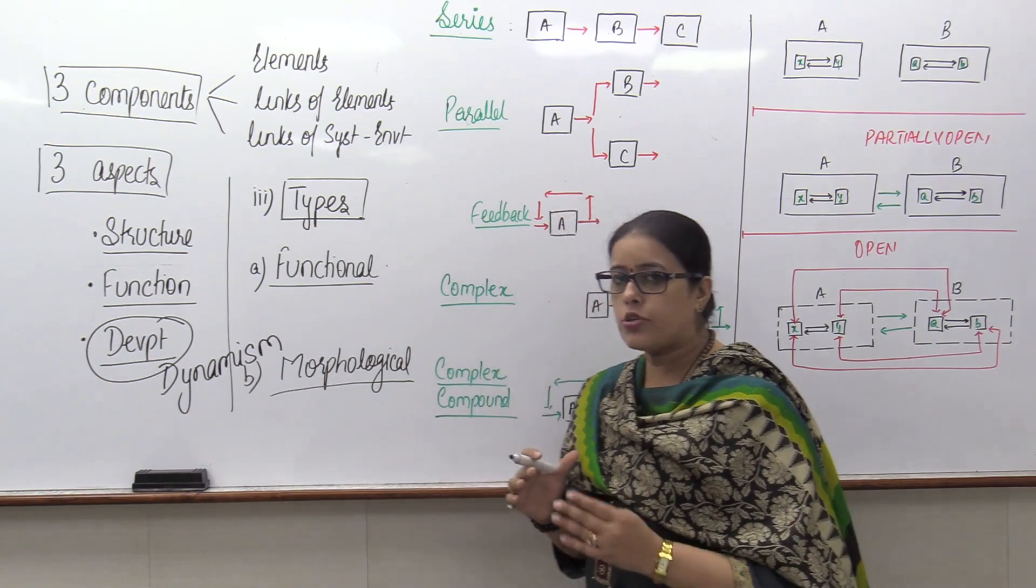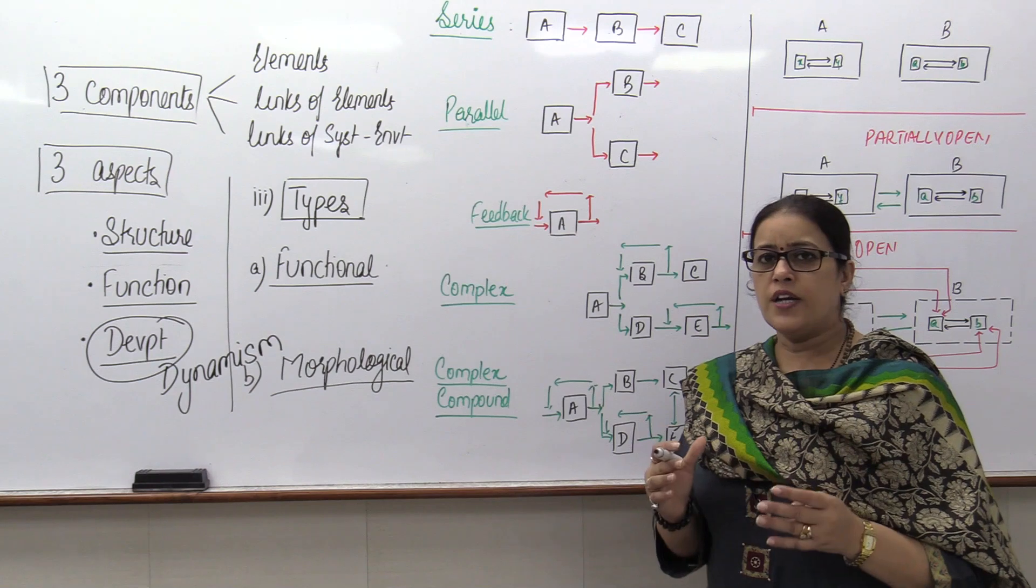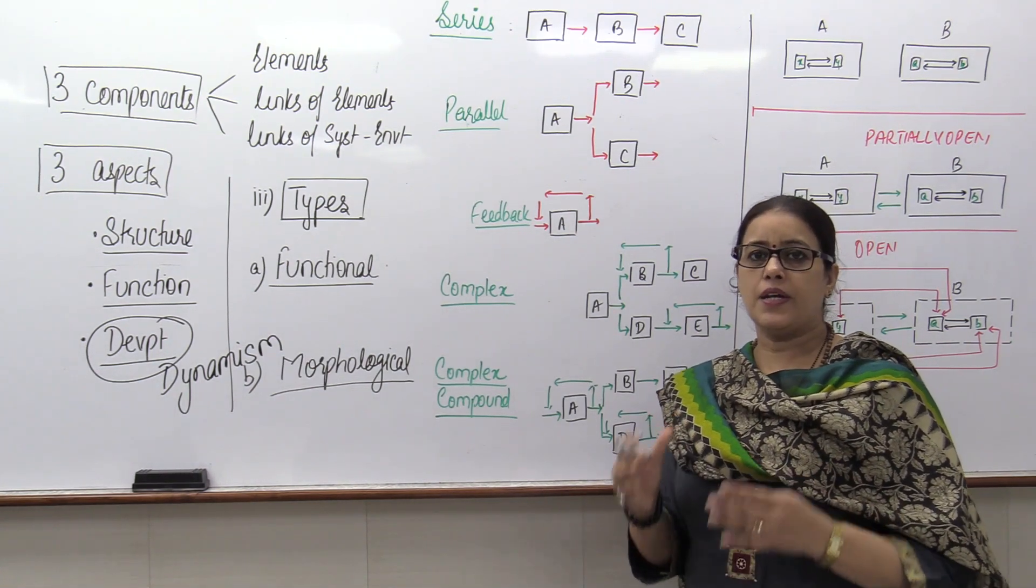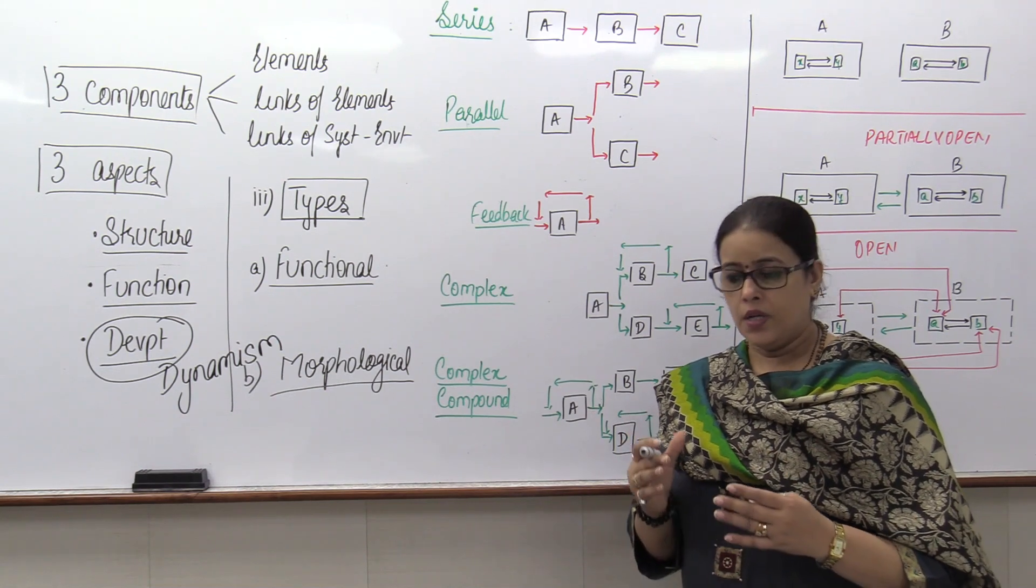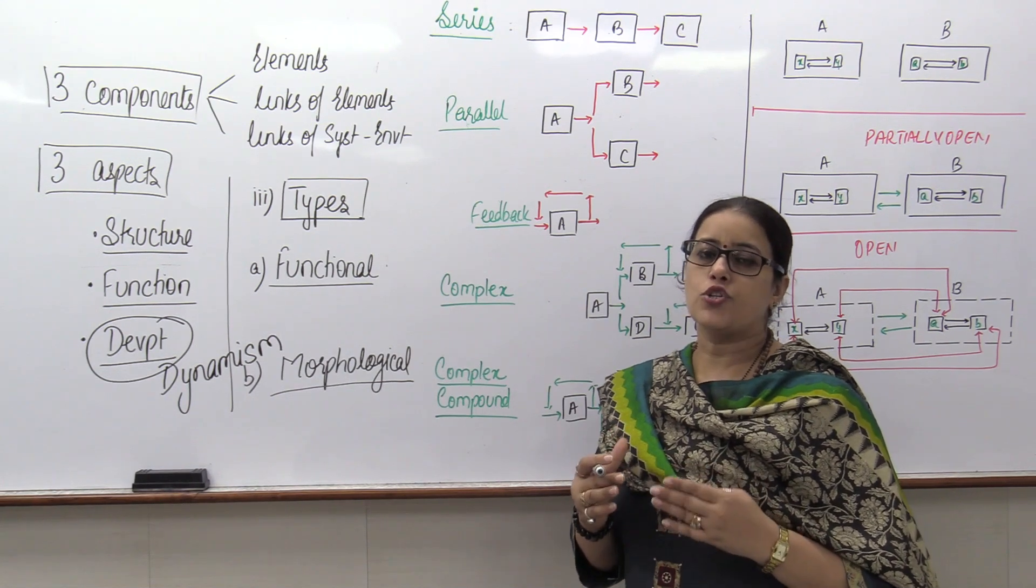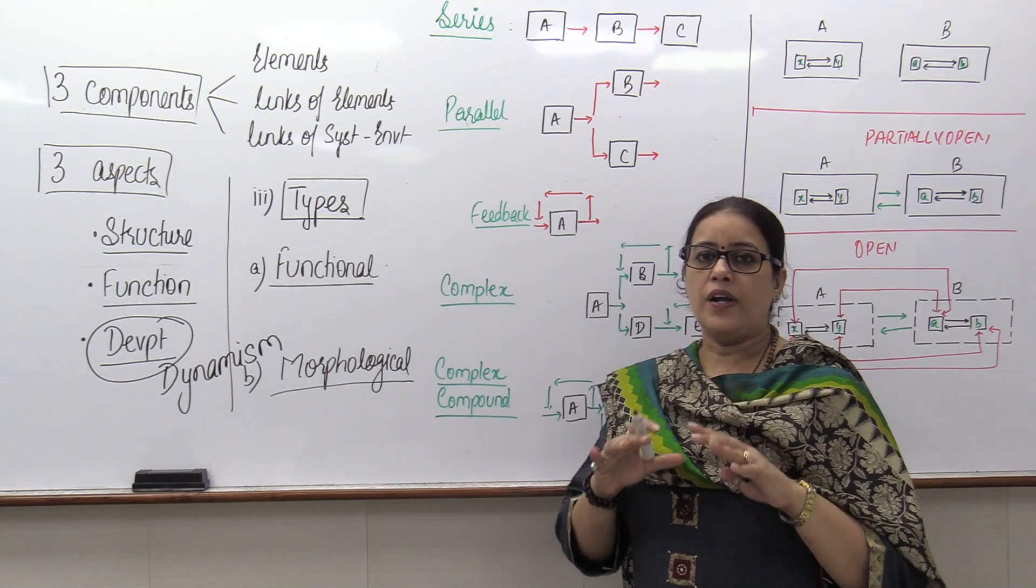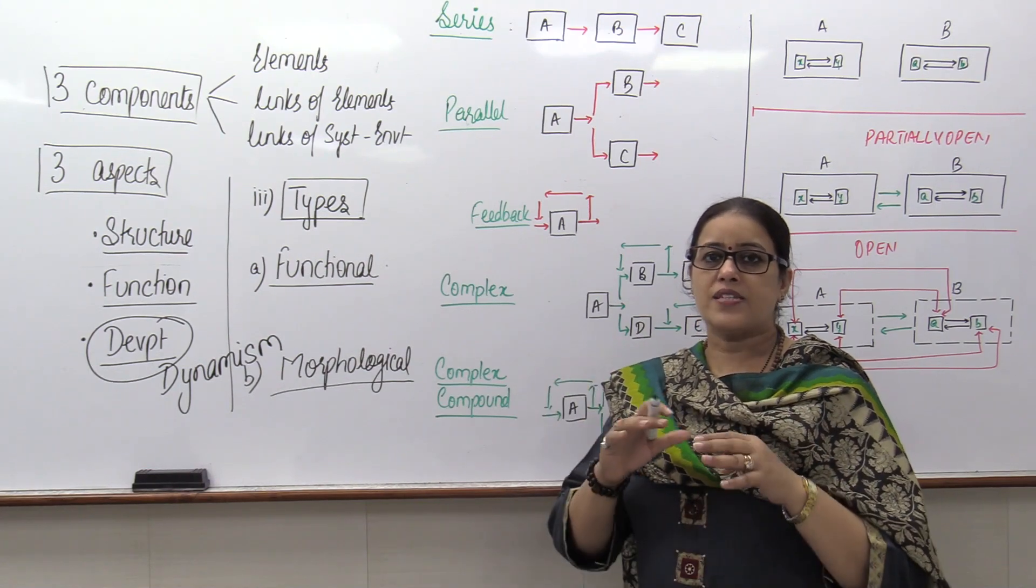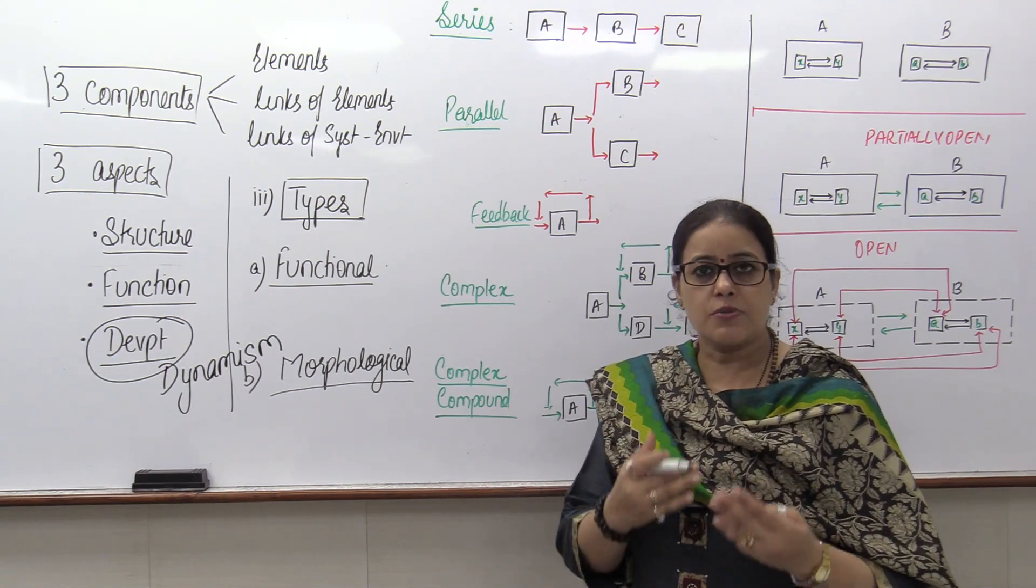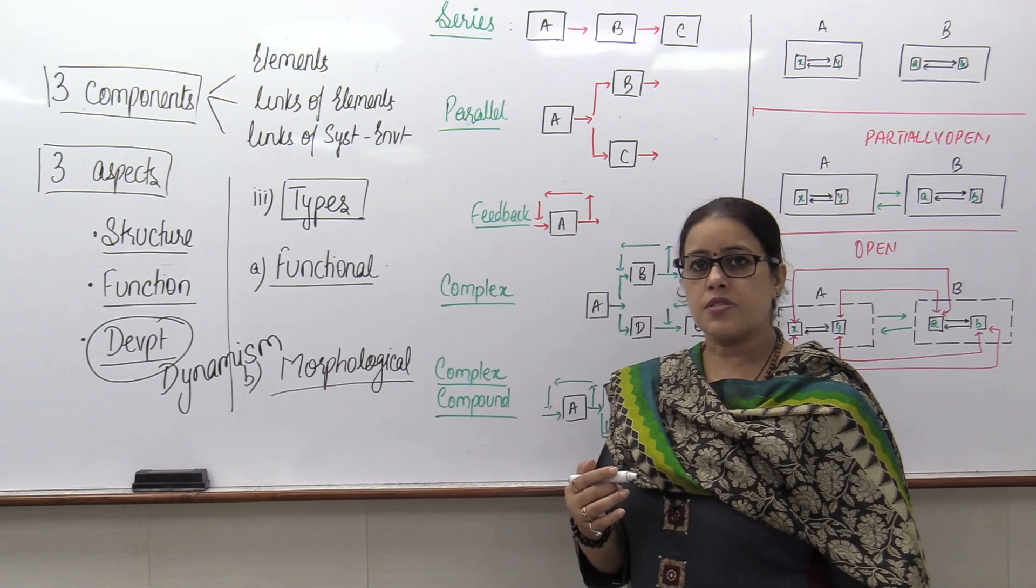I should not treat system as a static unit. Scholars like Minshull, scholars like Berry, Chorley, Peter Haggett, David Harvey who have been the prominent supporters of quantitative tradition in geography have strongly supported system as a fundamental framework, as an abstract framework which is not reality but helps us to explore reality.